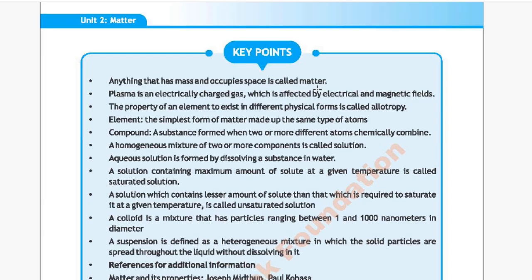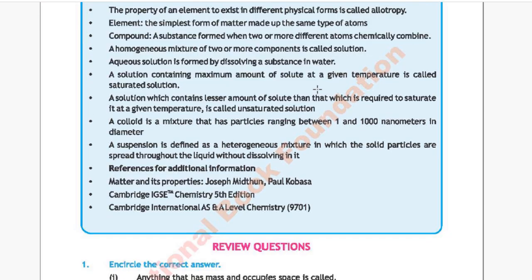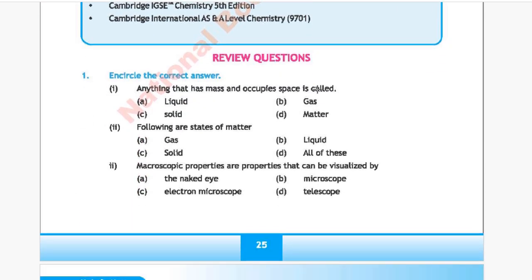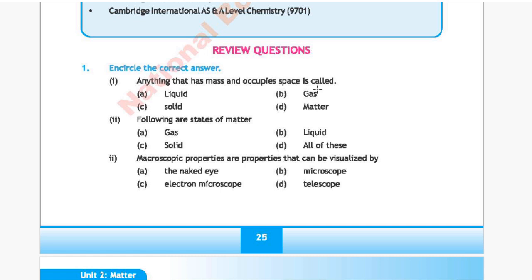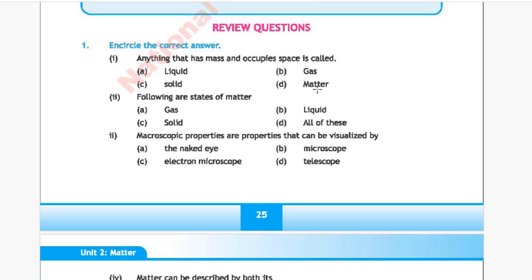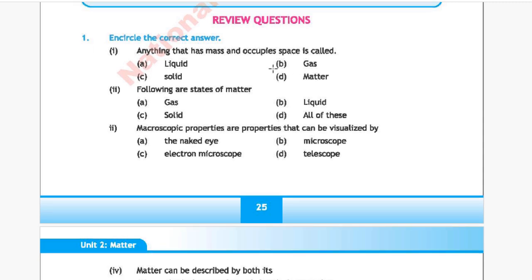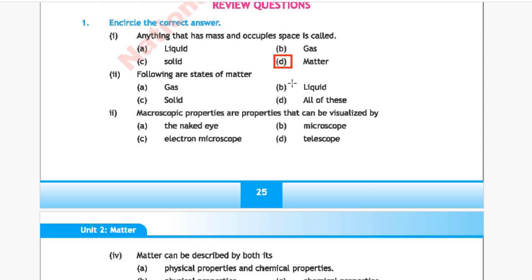Next chapter is Matter. Question 1: Anything that has mass and occupies space is called — Option A: liquid, Option B: gas, Option C: solid, Option D: matter. The correct answer is Option D, matter. Question 2: Following are states of matter — gas, liquid, solid, or all of these. The correct answer is all of these.